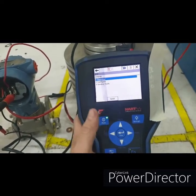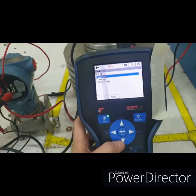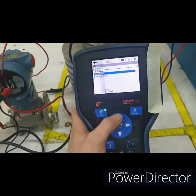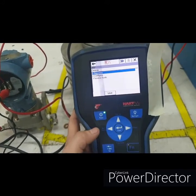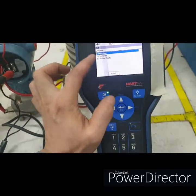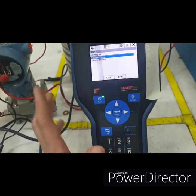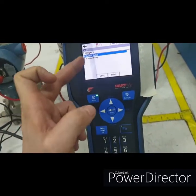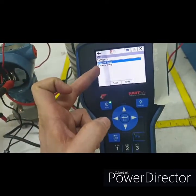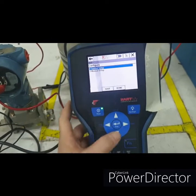We'll use the up or down scroll to navigate, or we could also use the number directly. Since it is number two, we could press number two directly. So it will lead us to two options: guided setup and manual setup. Let us go to the guided setup, basic setup.